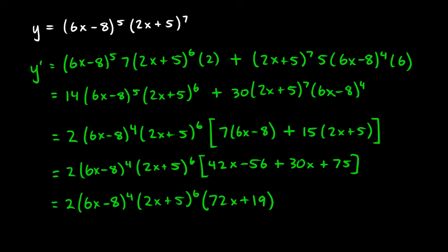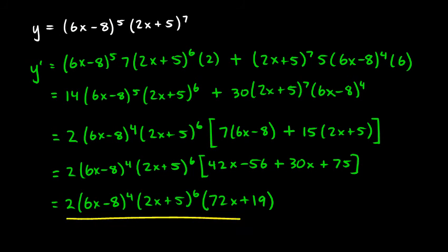Combining like terms inside the bracket: 42x plus 30x gives 72x, and negative 56 plus 75 gives positive 19. So the final answer is 2 times (6x minus 8) to the fourth times (2x plus 5) to the sixth times (72x plus 19). Once you applied the product rule, the rest was just algebra — that's the simplified factored form.